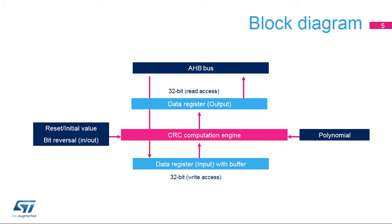It contains a single 32-bit register, which is used for both writing and reading by either the CPU or DMA controller. The initial value, input-output bit reversal, and polynomial coefficients are configured by the software during the initialization phase before starting a new CRC calculation.